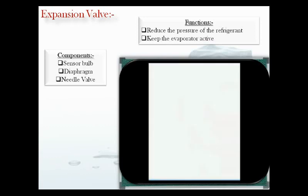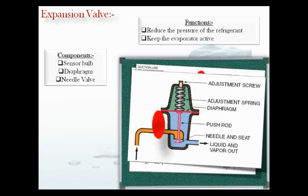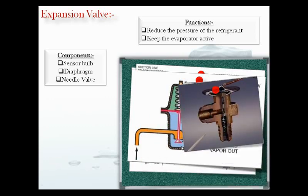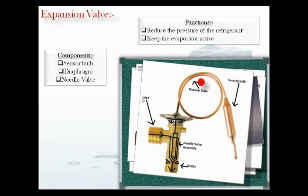This figure shows the expansion valve with an adjustment screw to adjust the spring load, a diaphragm, and a needle. In reality, an expansion valve consists of the sensing bulb and the expansion valve body.